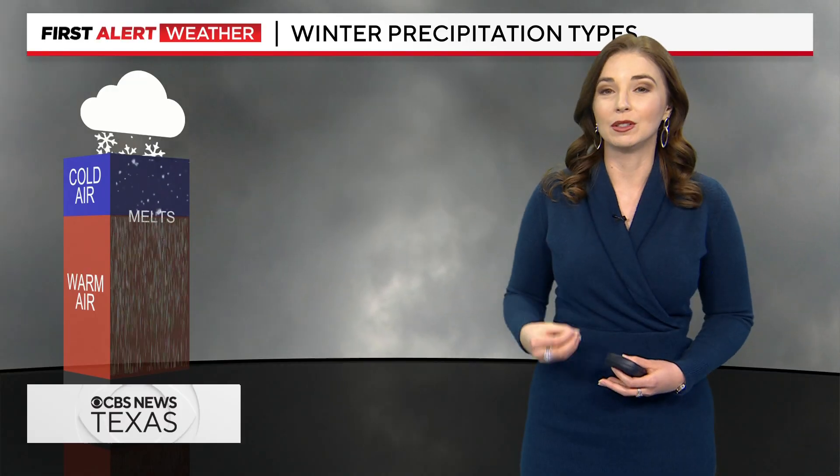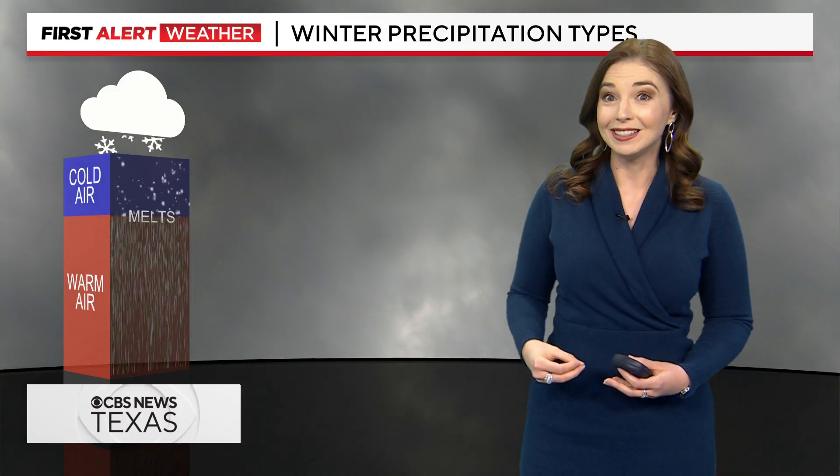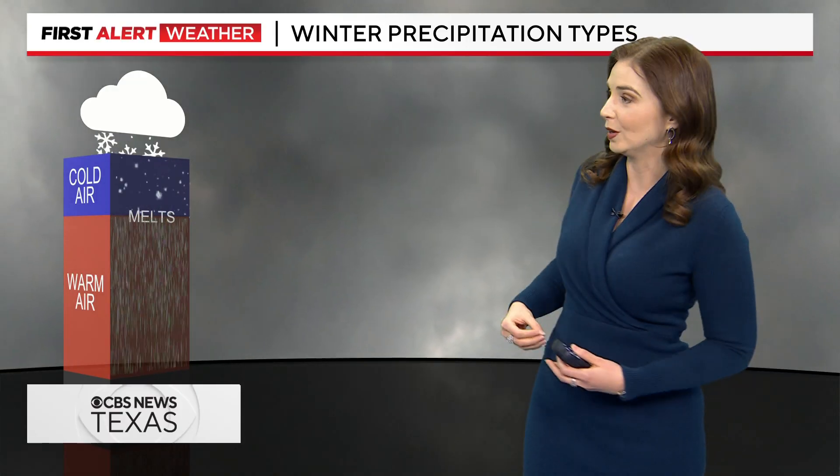I'm First Alert meteorologist Brittany Rainey. We've been talking a lot about different types of precipitation and just what type we're going to see with different winter systems moving through the area. So let's take a look at the atmospheric column of air, because this is what determines the type of precipitation we see at the surface.